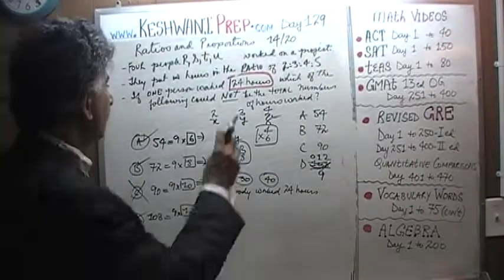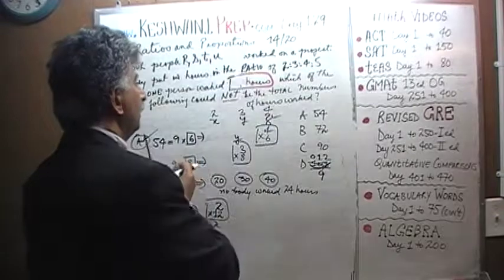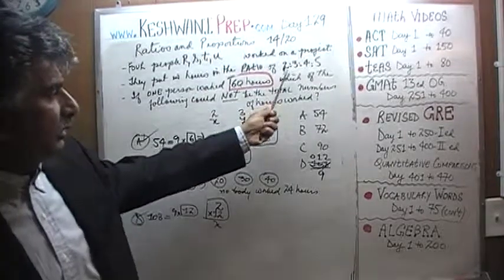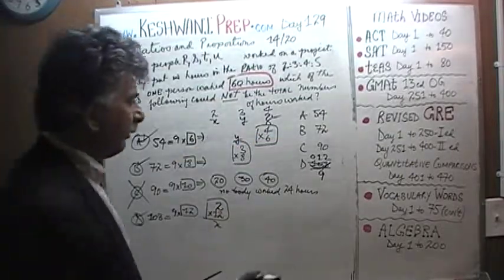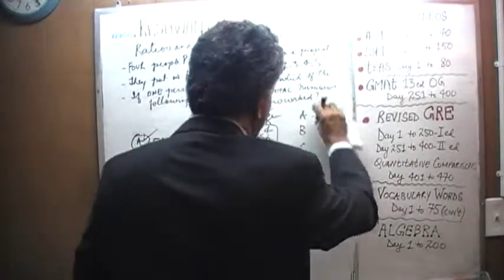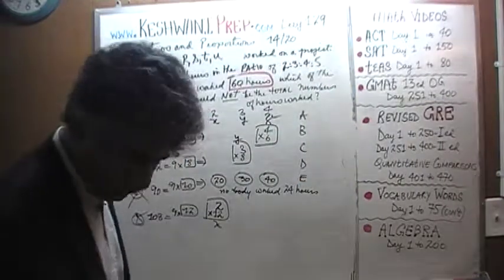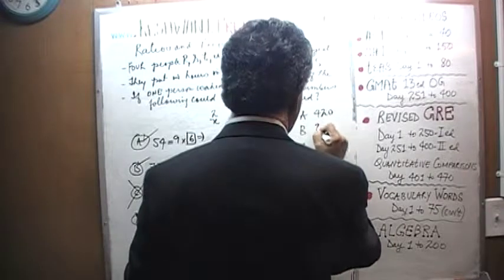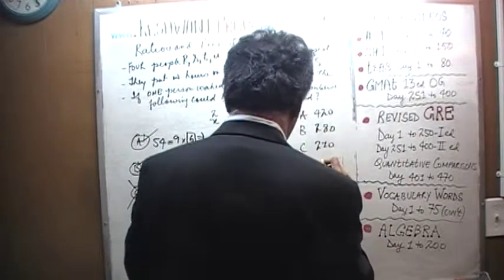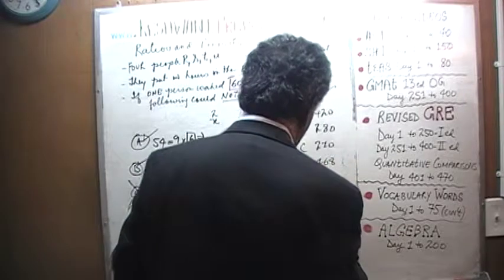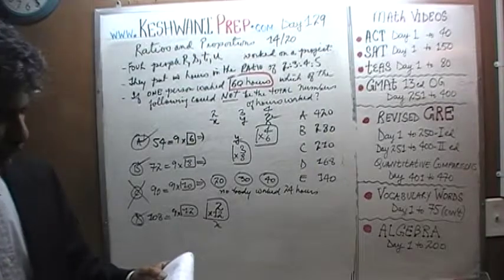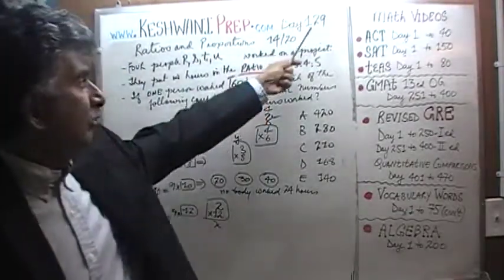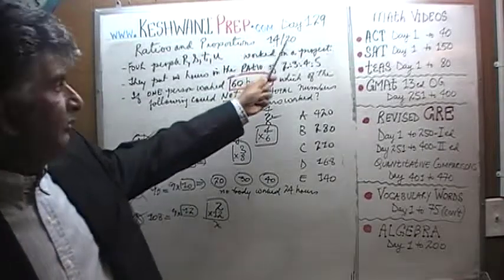One person, we are told, works 60 hours. Based on the fact that one person works 60 hours and 4 people work on a project in the ratio of 2 to 3 to 4 to 5, which of the following could not be the total number of hours worked? And here are the answer choices. 420, 280, 210, 168 and 140. One more time, 420, 280, 210, 168 and 140. This is your homework for tomorrow. Make sure you do this problem ahead of time before you watch tomorrow's video. Day number 129, the 15th in the series of 20 on ratio and proportions.